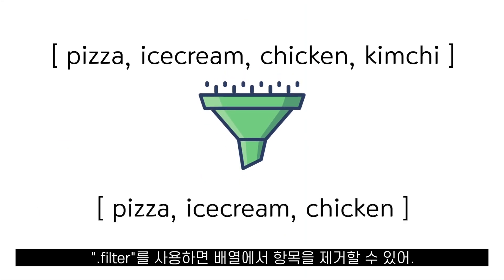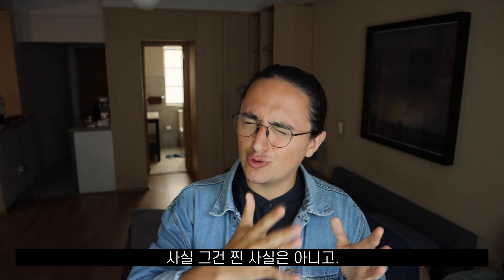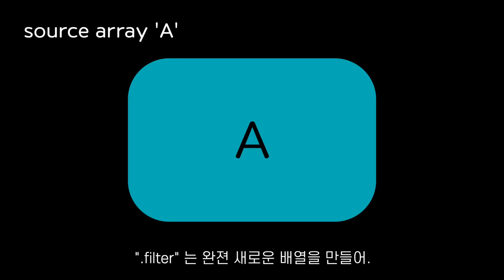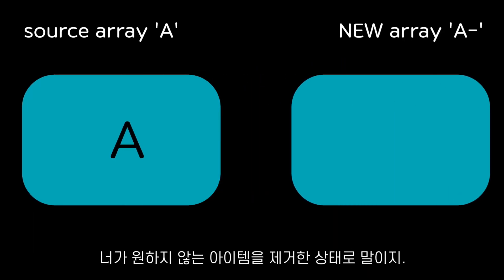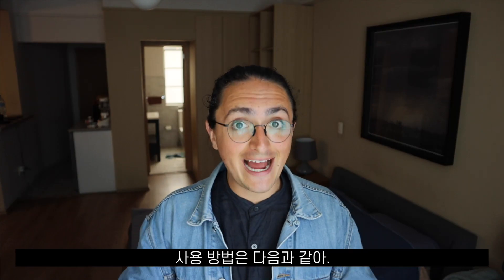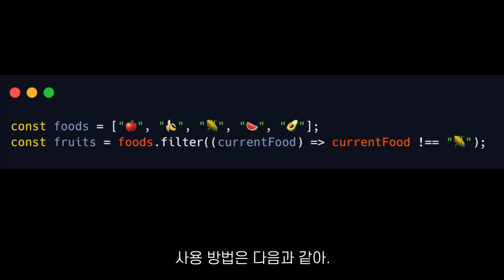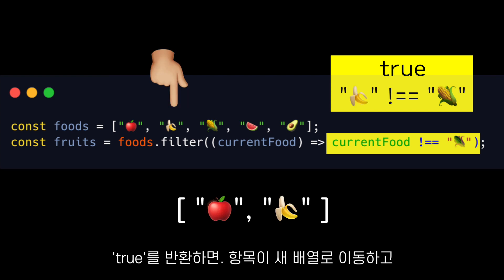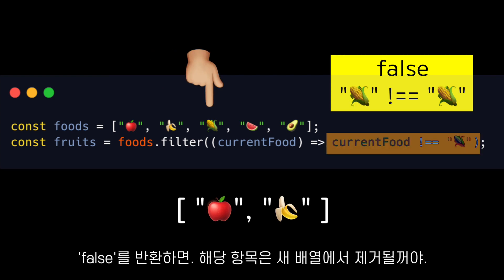That filter allows us to remove an item from an array — well, actually that's not entirely true. That filter, just like that map, doesn't modify the source array. What that filter will do is create a new array without the items that you don't want to be there. The way we use it using arrow functions is like this. The rule of the callback function for that filter is very easy: if we return true, then the item currently being processed is going to end up in the new array. If we return false, then that item is going to be excluded from the new array.